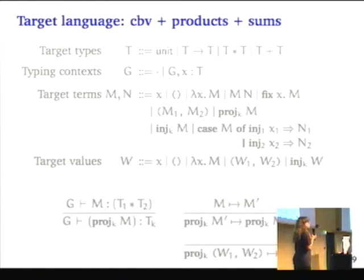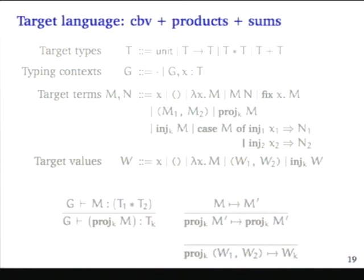The target semantics is completely uninteresting, so it's in gray. There's nothing interesting here - it's just products and sums. There are no intersections, no unions, and no merge. The stepping rules are exactly what you expect from the textbook.